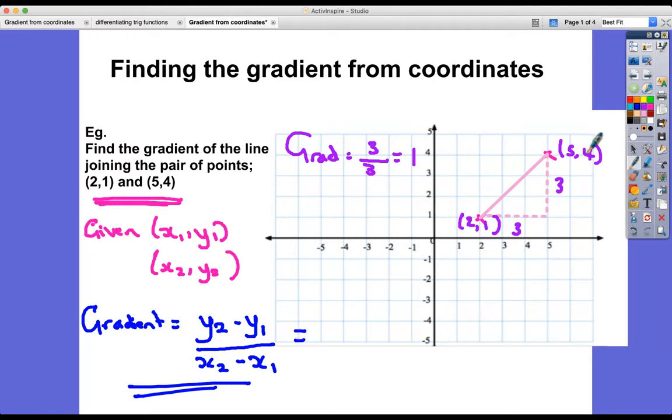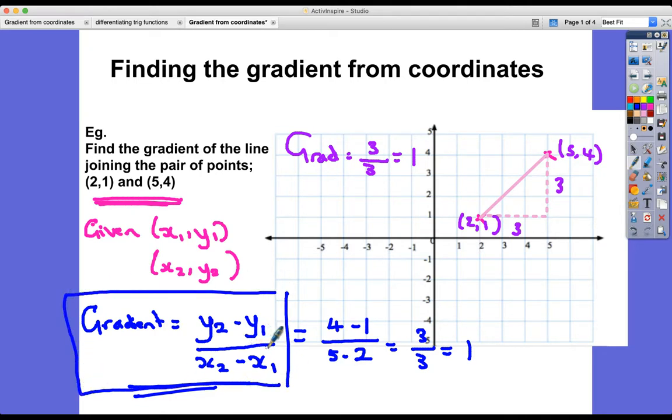Let's check it again. So 4 subtract 1 in this case, divided by 5 subtract 2, which is 3 divided by 3, which is 1. So this will always get you the gradient and you don't necessarily have to actually draw it out. Let's go and try it now. I'm going to take a screenshot of it and we're going to try it on the next page with the next example.